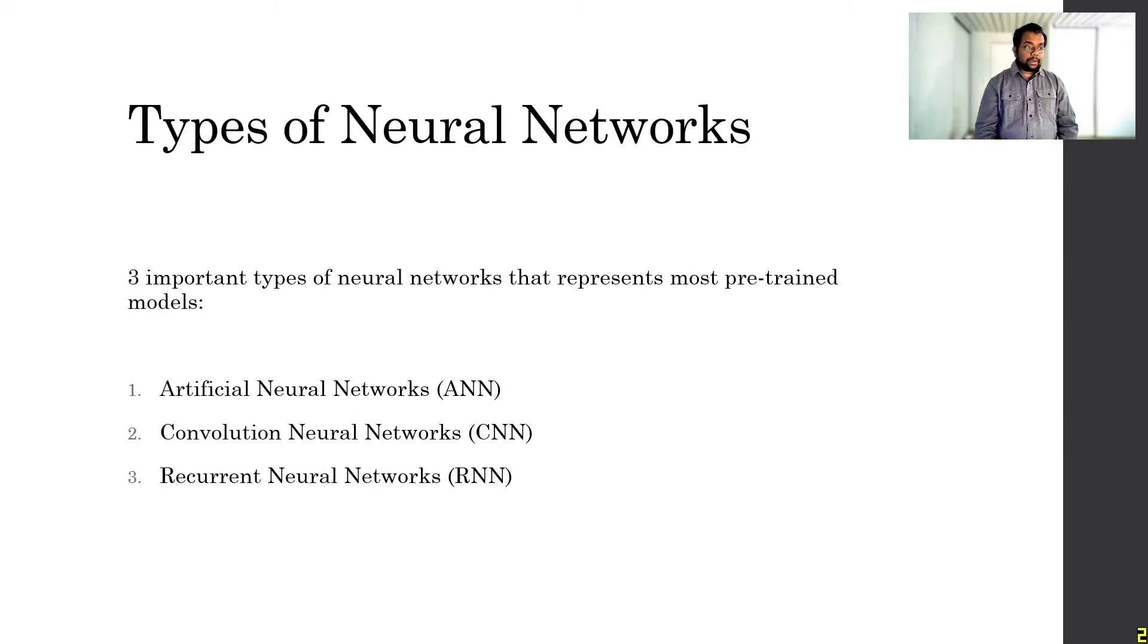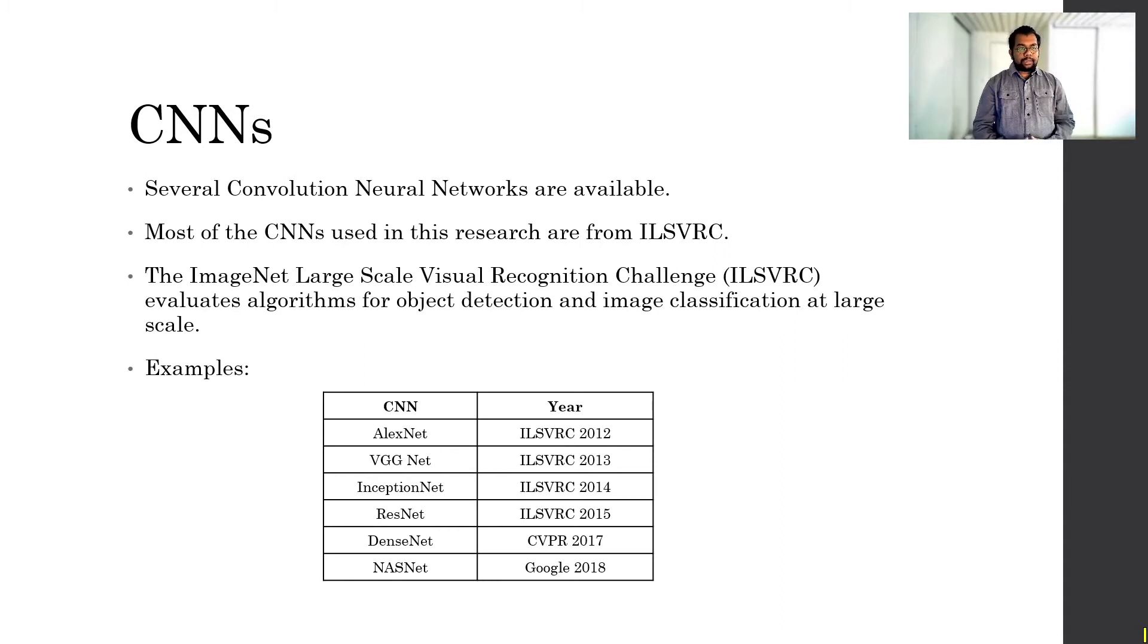There are many different types of neural networks. Mostly the ones that we see are artificial neural networks, or ANN, convolution neural networks, CNN, and recurrent neural networks, or RNN. And in this work, we'll be focusing on CNNs.